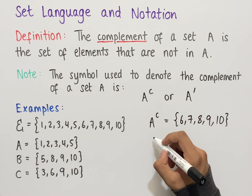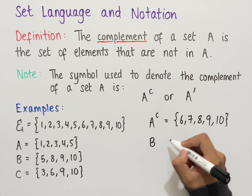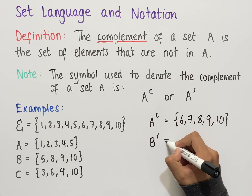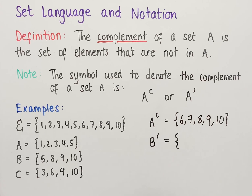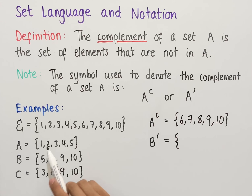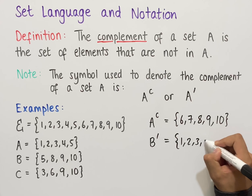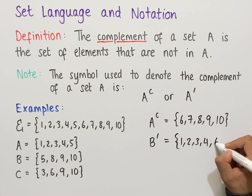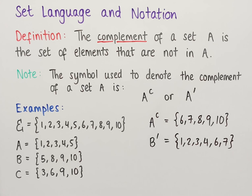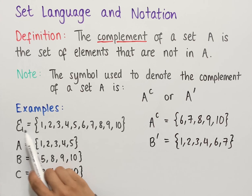Let's work out B complement. Using the dash notation, this is all of the elements that are not in set B but are in the universal set. Since 5, 8, 9, and 10 are in B, the elements not in B are 1, 2, 3, 4, 6, and 7. These are all of the elements not in B but in the universal set.